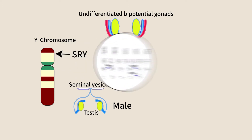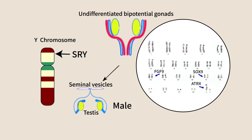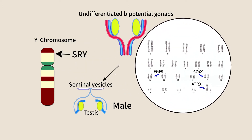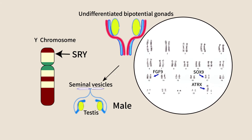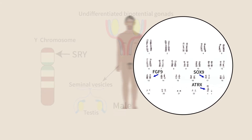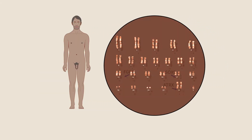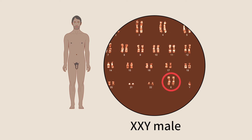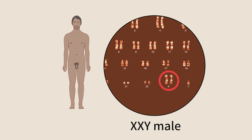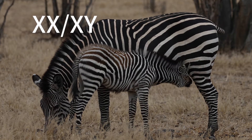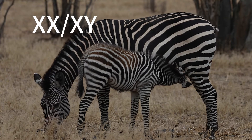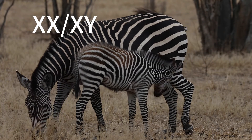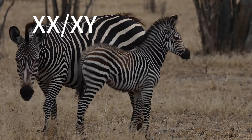The protein encoded by SRY leads to the expression of several autosome-encoded proteins that control the development of the male system. In humans, a single Y is sufficient even if, due to chromosomal abnormalities, there is more than one X chromosome. This XY system determines the sex of mammals, some other vertebrates, and some insects.